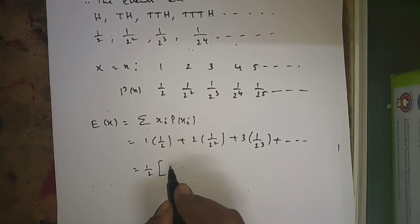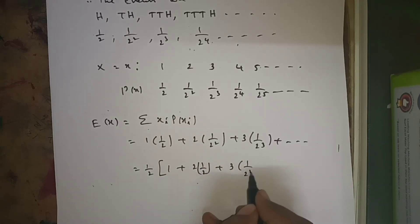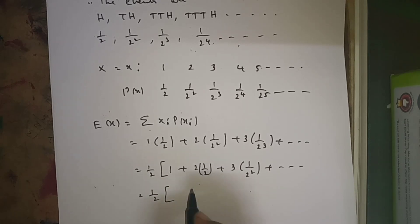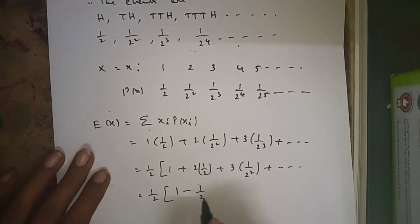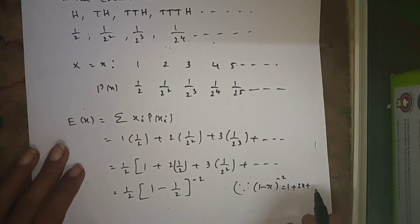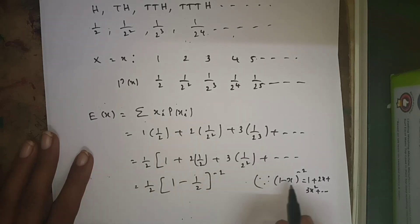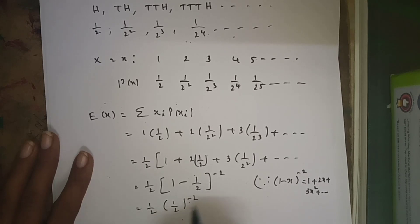From this, we can take 1/2 common: E(x) = (1/2) × [1 + 2×(1/2) + 3×(1/2²) + ...]. This is in the form of (1 - x)^(-2), using the formula: (1-x)^(-2) = 1 + 2x + 3x² + ... So E(x) = (1/2) × (1 - 1/2)^(-2) = (1/2) × (1/2)^(-2) = (1/2) × 4 = 2. Therefore, E(x) = 2.